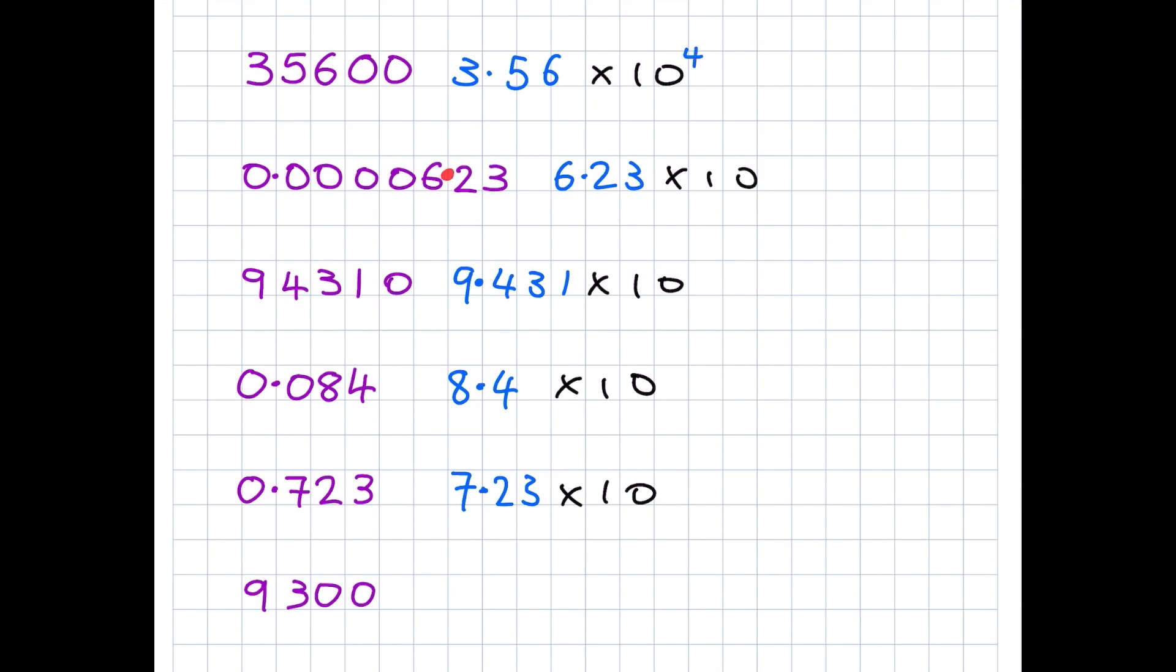For the next one, 6.23 is much bigger than the original number, so to turn it back into the original number, we have to take the decimal point the other way, which is to the left. So our little index number will be minus something. It will be a negative number. Let's count 1, 2, 3, 4, 5. So this will be minus 5.